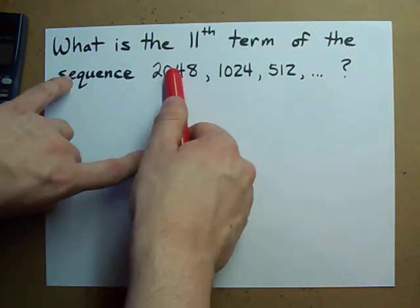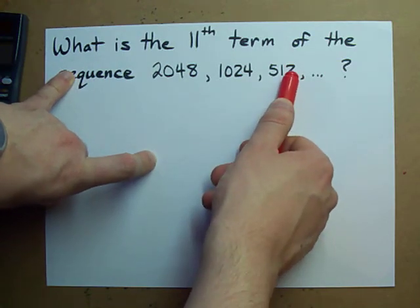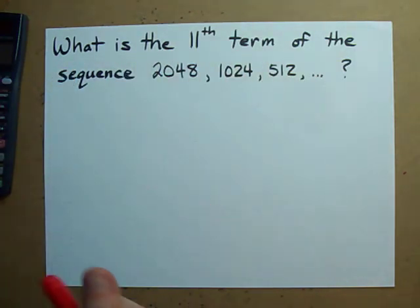Actually, we're dividing by 2 and dividing by 2. That's a hint that it's geometric.